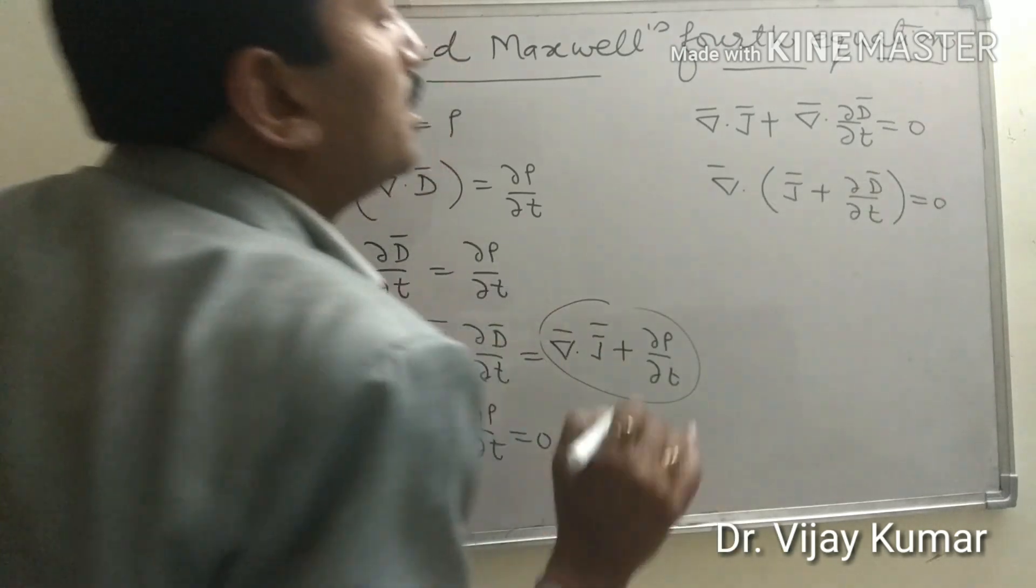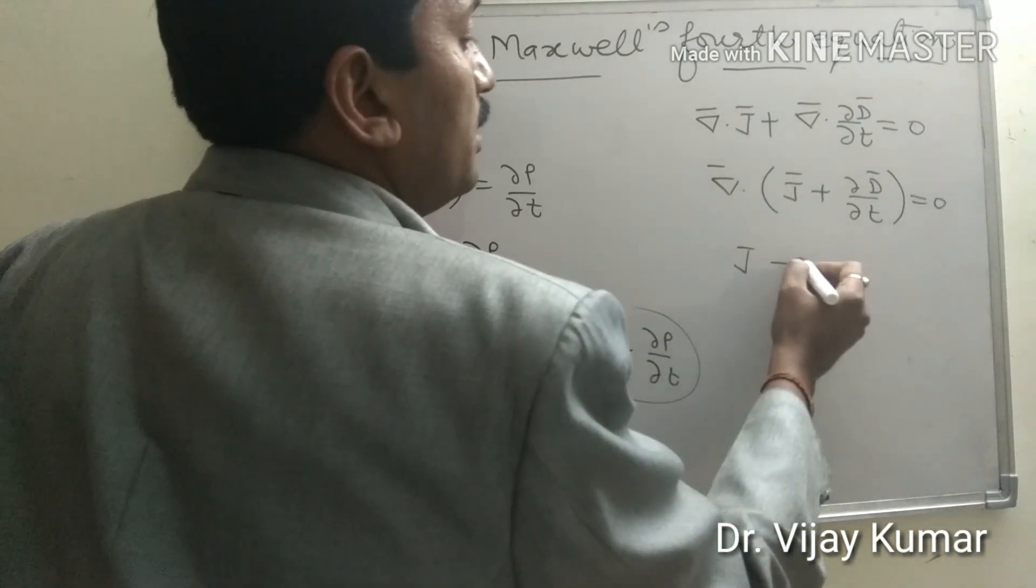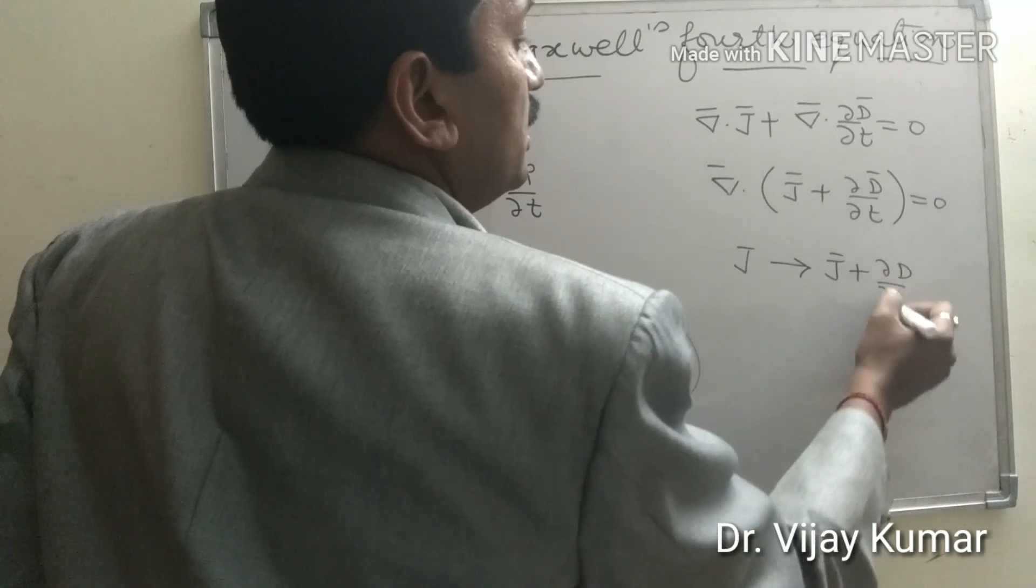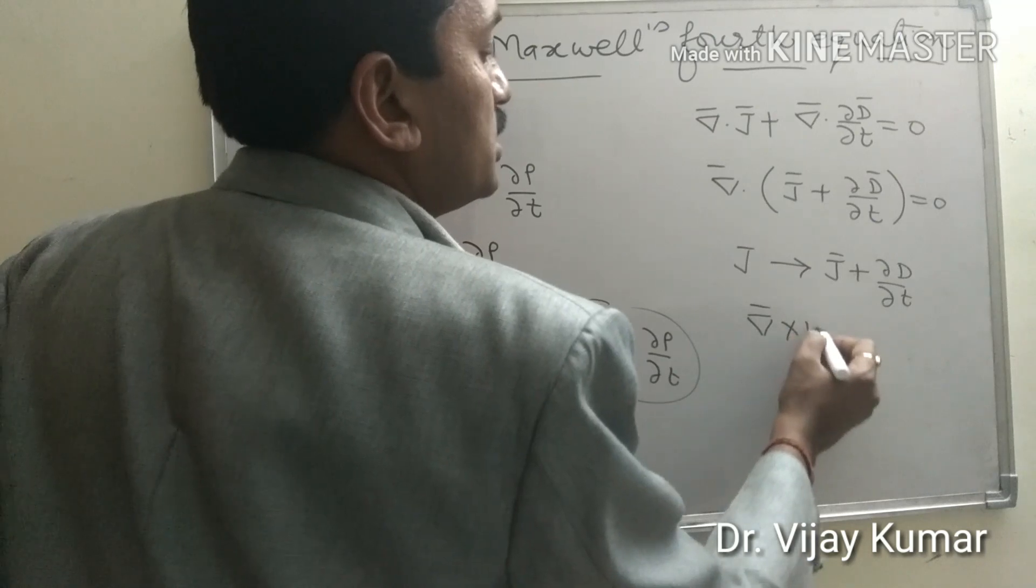It means we replace J by J plus del D over del t. And modified equation becomes del cross H